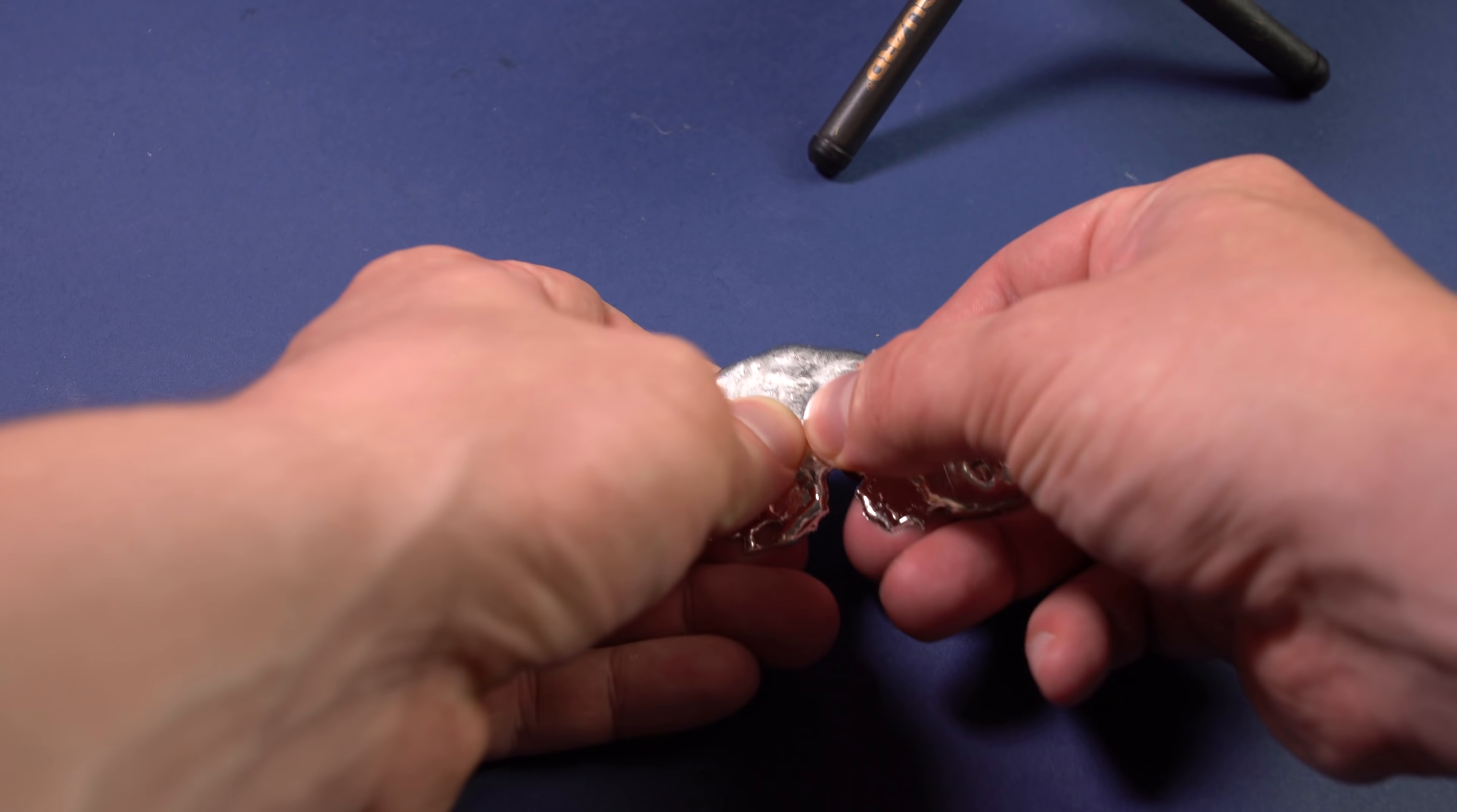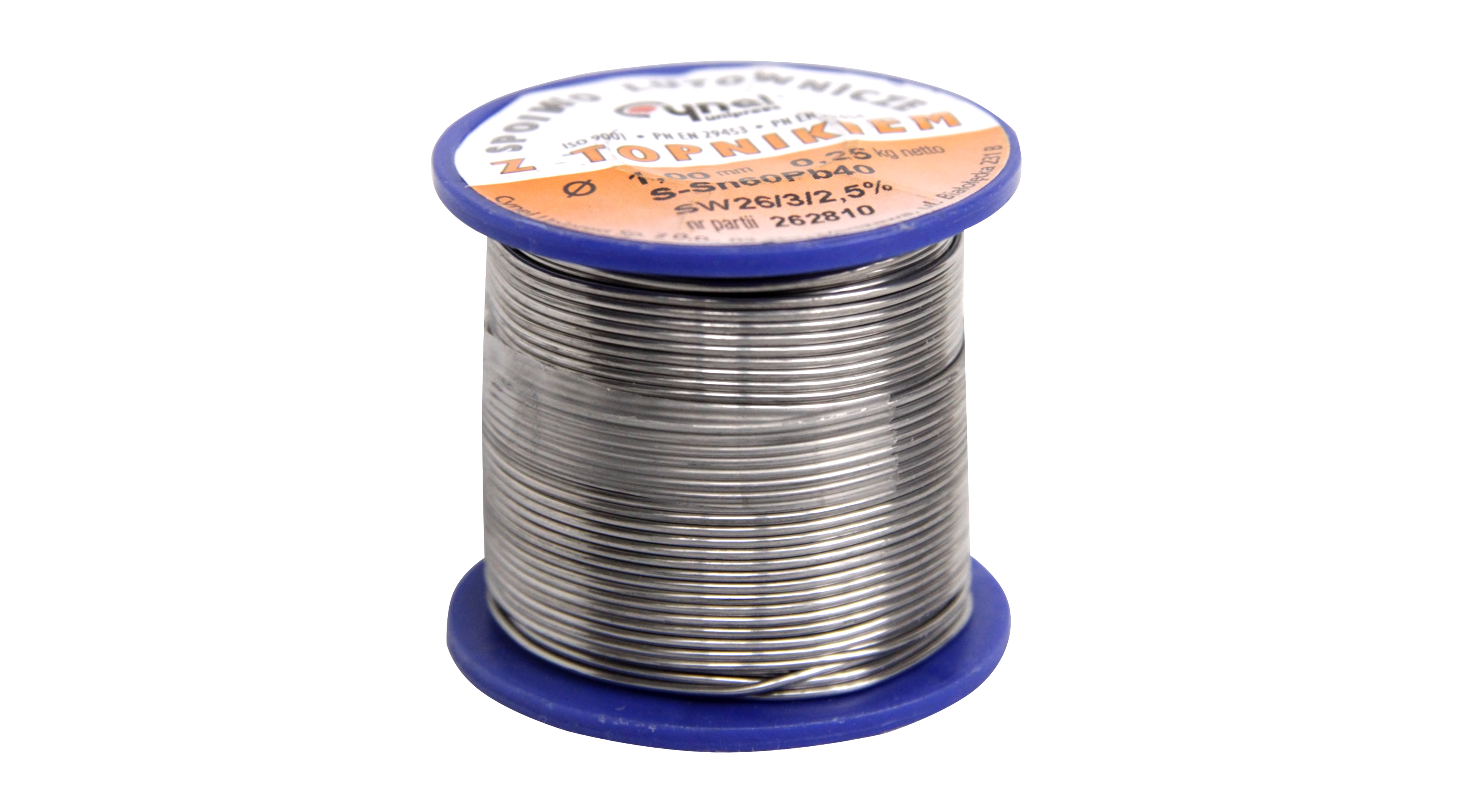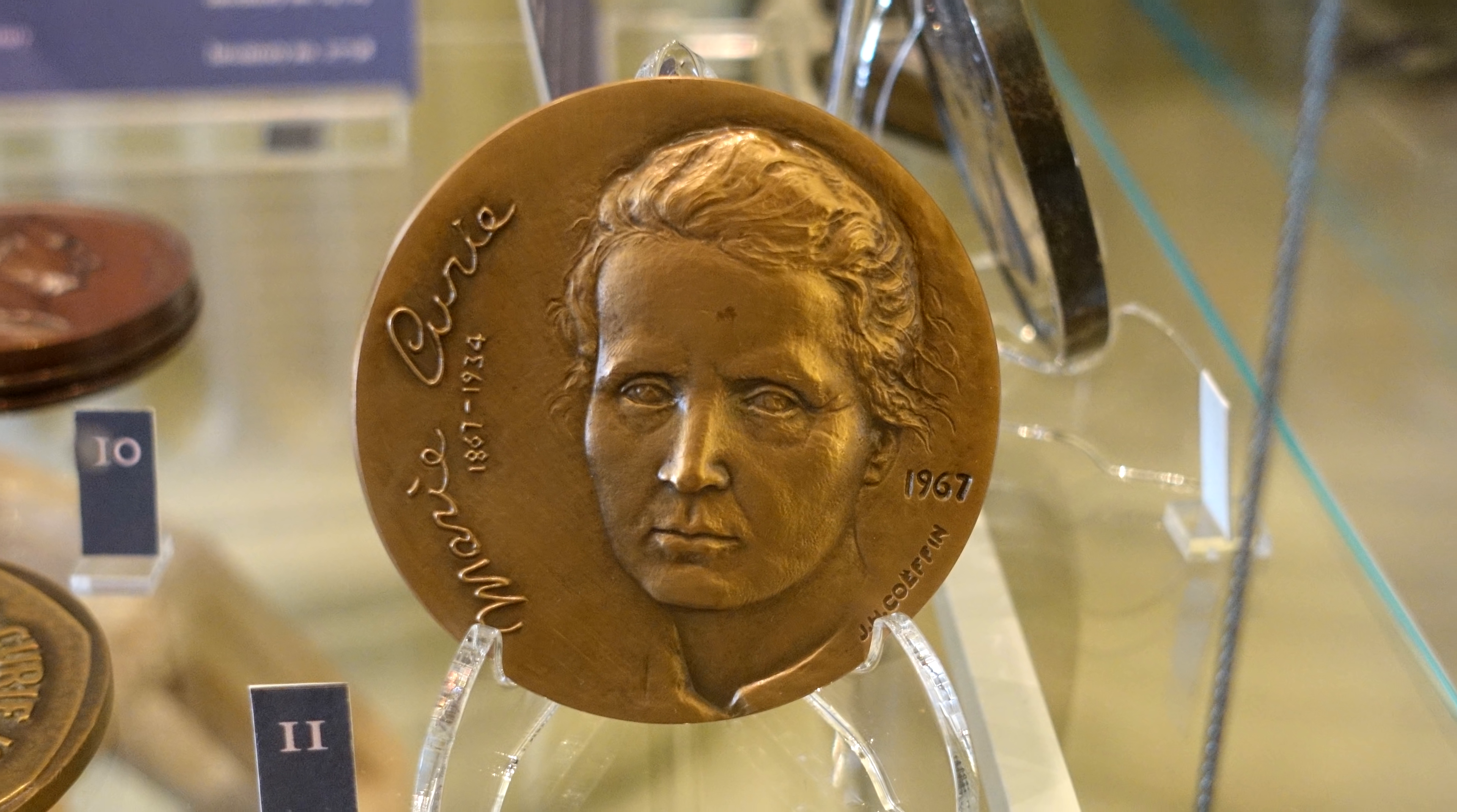In ordinary life, we can find tin in the composition of solder. Also, tin foil comes as mixture with other metals, mainly with lead. The most important alloy of tin is bronze with copper.